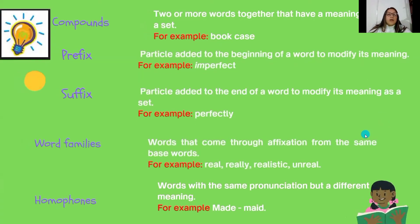Compounds are two or more words that are together and have a meaning as a set. For example, bouquets. Prefix: a particle added to the beginning of a word to modify its meaning. For example, imperfect.